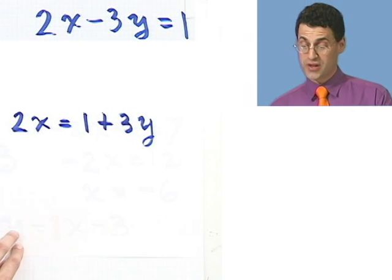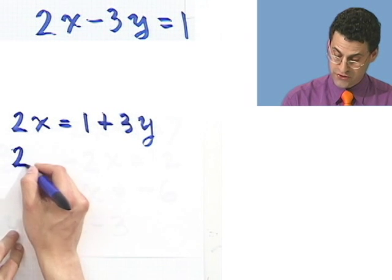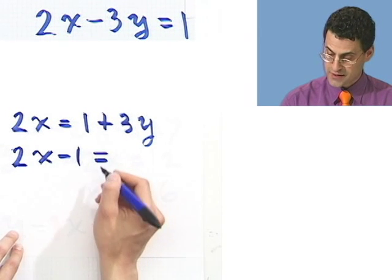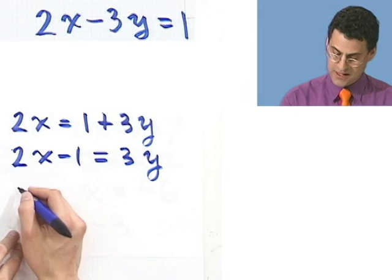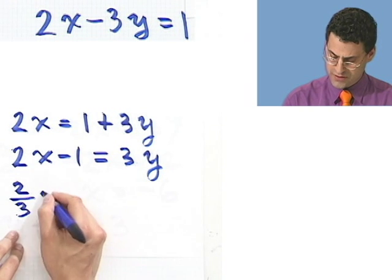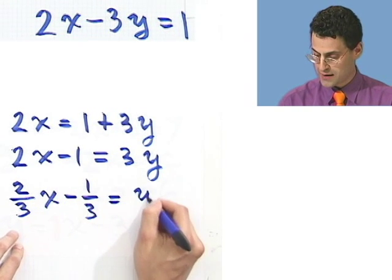Then I'll subtract 1 from both sides, and I see 2x minus 1 equals 3y. And if I divide both sides by 3, I would see that 2 thirds x minus 1 third equals y.